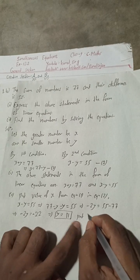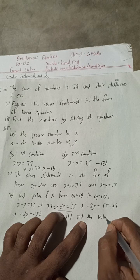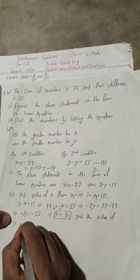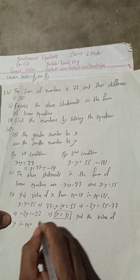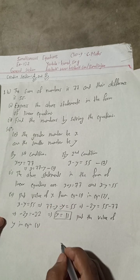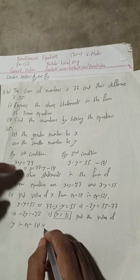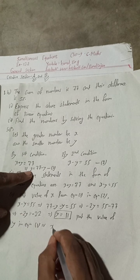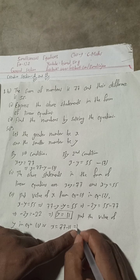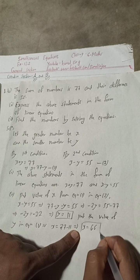We got y equals 11. Now put the value of y in equation one: x equals 77 minus 11, which gives x equals 66.